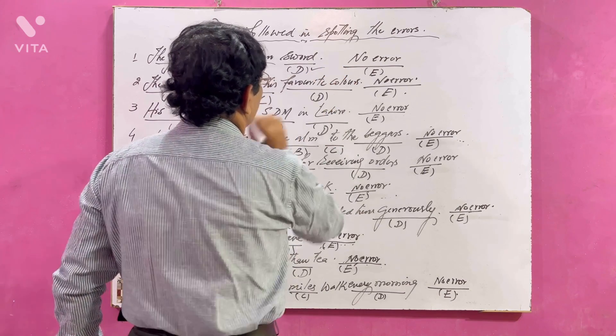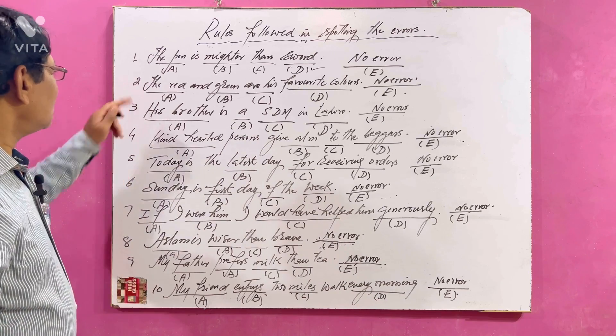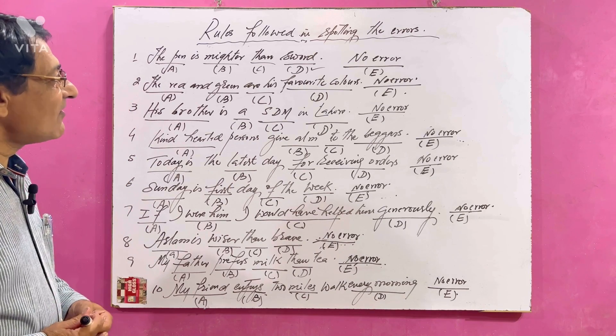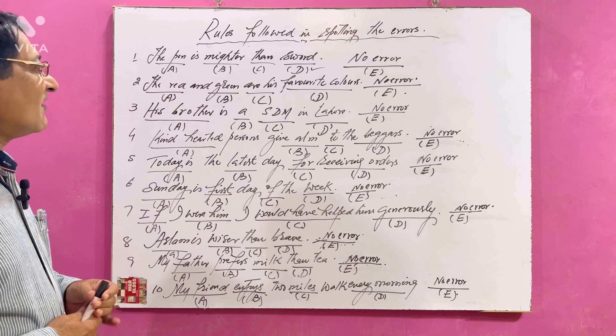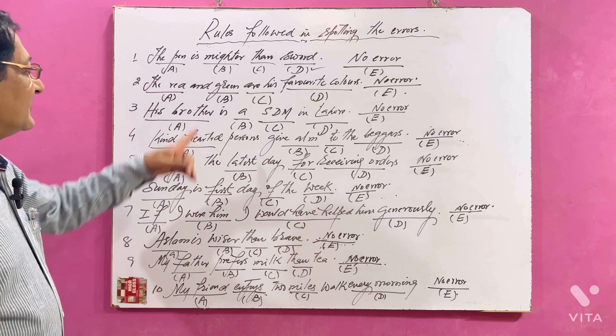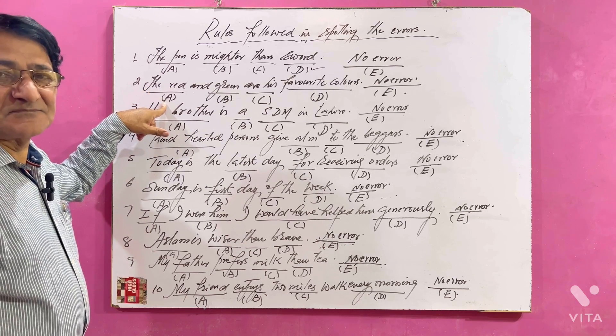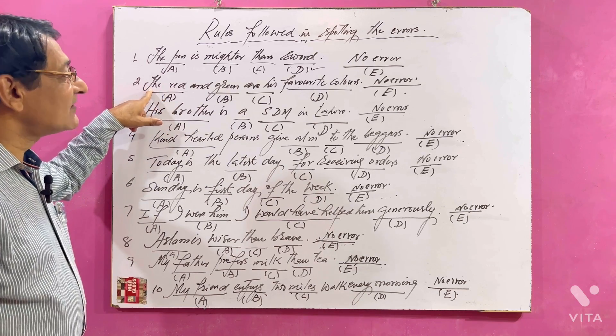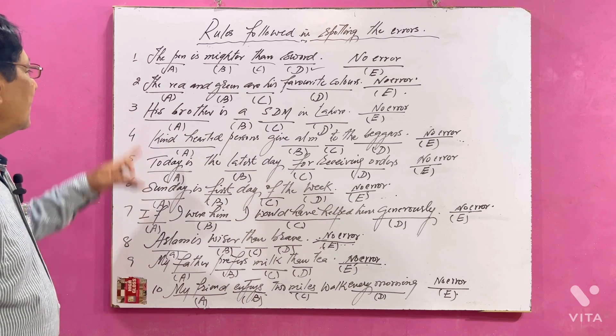Number two sentence: The red and green are his favorite colors. Here there is no article, we have to remove this one. So there's error in A. We have to say 'red and green are his favorite colors'. That's right.